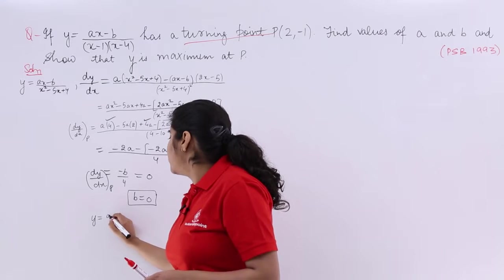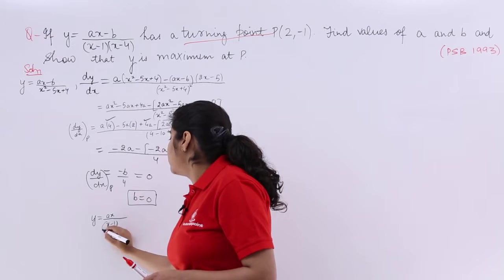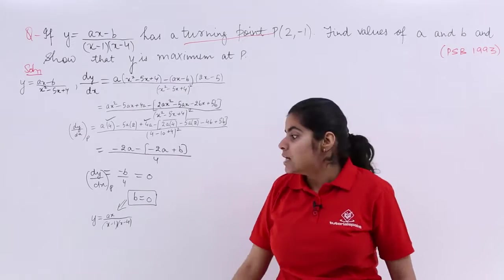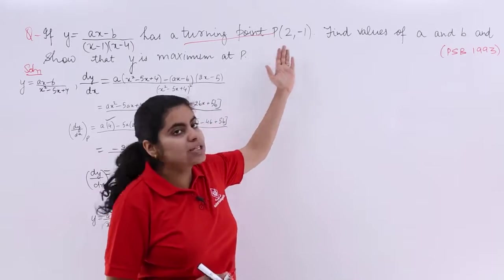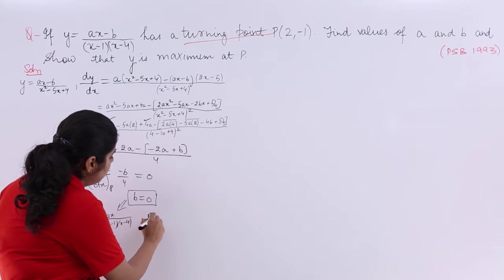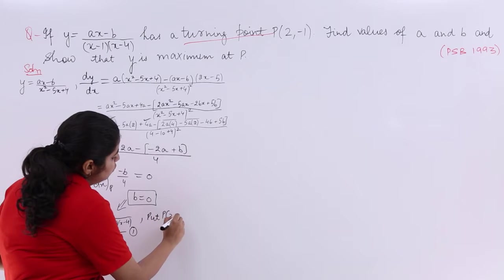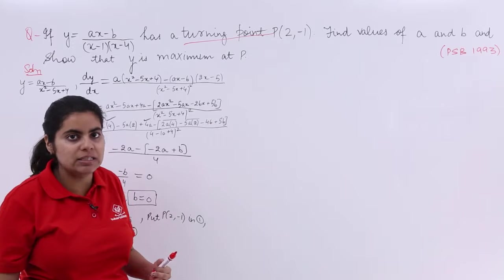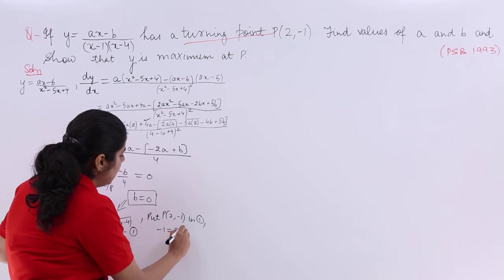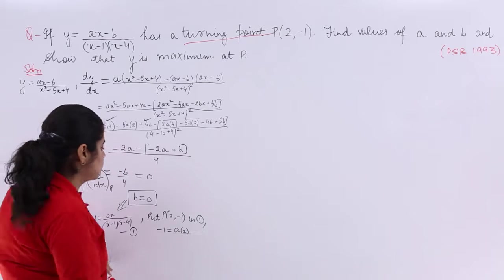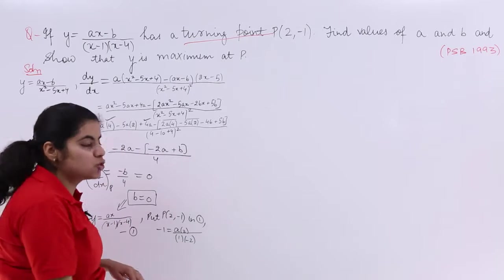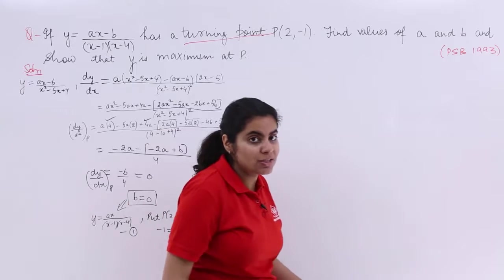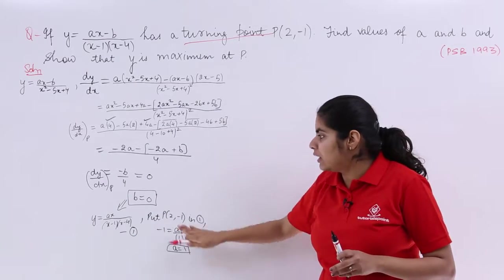So y is equal to ax upon x minus 1 into x minus 4. Now y and x are also there. Let's put y and x also. These questions will be very lengthy in examination also. So it is y which makes it minus 1 equals a into 2 upon x minus 1 times x minus 4. What is x? 2 minus 1 is 1, x minus 4 is minus 2. Let's solve it. Now it is 2 and 2 getting cancelled. So it gives me a is equal to 1. We have two answers. Very easy question. a is 1, b is 0.